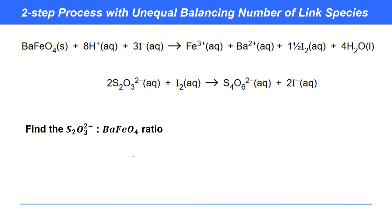Here's another example for you to try. Pause the video and see if you can find the thiosulfate to barium ferrate ratio. To find our linked species, we're looking for something formed in the first reaction and used in the second. Again, it's iodine — very common that it's iodine in these, because that's always what reacts with the thiosulfate in the second stage. So pretty much always iodine is our linked species.